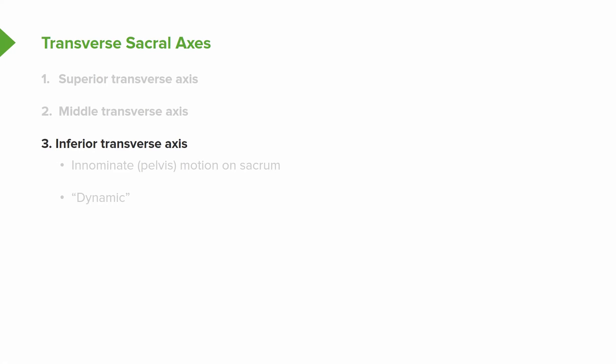When talking about the inferior transverse axis, we push on the ILA to see if both sides move — to see whether there's a torsion, whether it's this way or that way, or if one side is locked or not moving. In the inferior transverse axis, you're checking for motion on the pelvis through a dynamic springing test, seeing where and how motion is occurring.